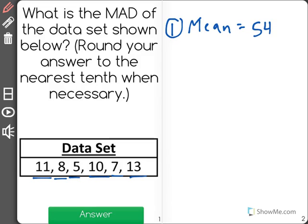But to find the mean, I then need to divide it by however many numbers there are in my data set. In this case, there are 6. So our mean is equal to 9.